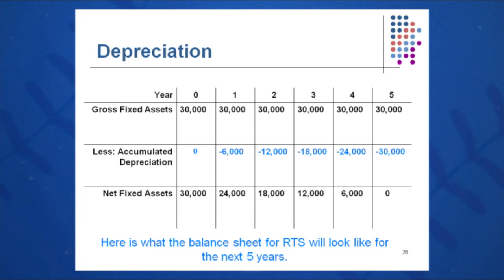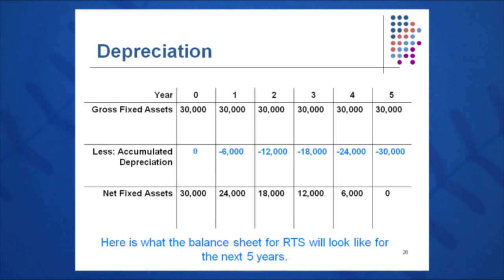That doesn't mean you can't sell the vehicle in year five for $5,000 or $10,000 if it's been kept in good condition — that's a market value issue. If you sell it for more than its book value at any point during the asset's life, you'll have to pay taxes on that gain.